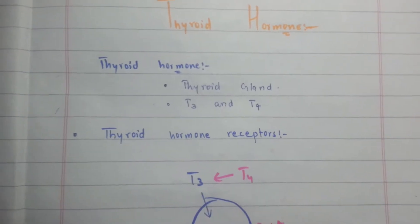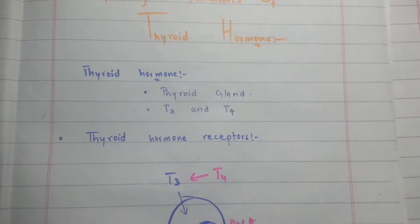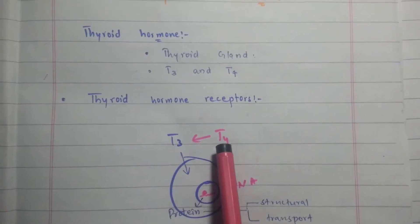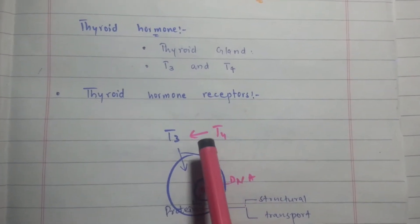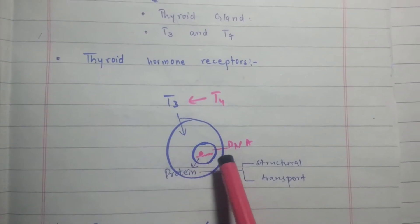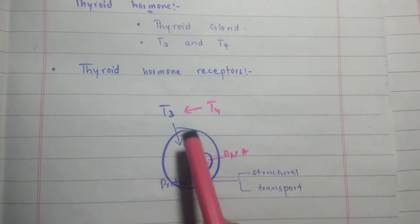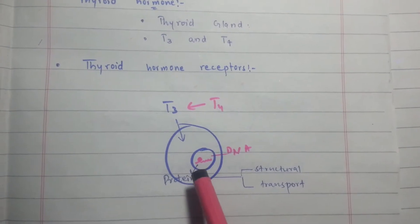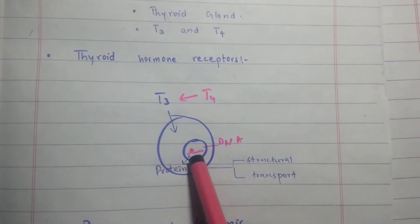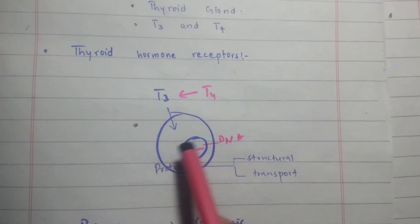These thyroid hormones play a key role in the metabolism of the body. Before going to the physiological functions of the thyroid hormone, I will explain how thyroid hormones act on the cell. Thyroid hormones enter the cell through thyroid hormone receptors, which are present inside the cell. T3 triiodothyronine comes into the cell easily, then enters the nucleus.